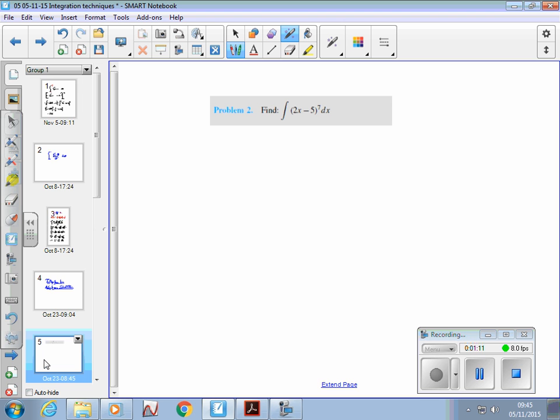I could do it that way. And if I had something like integrate 2x minus 5 squared, I might be tempted to do that because I could easily multiply out those brackets. But if I've got something like this, then I think about an algebraic substitution way.